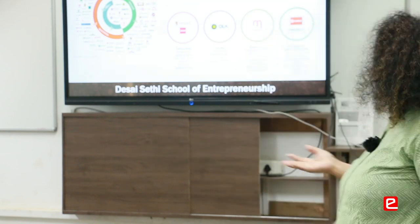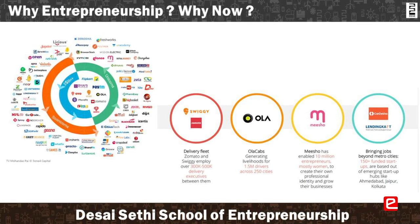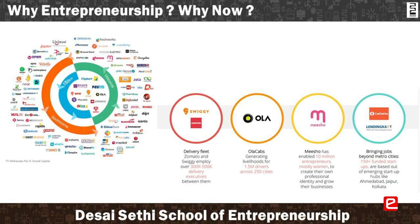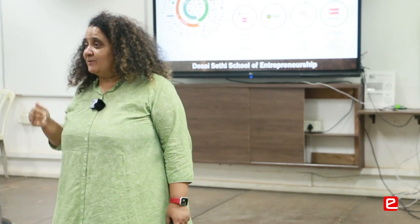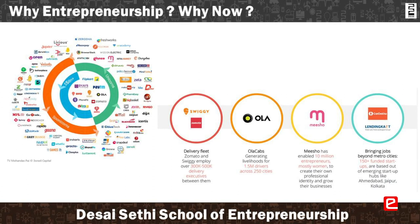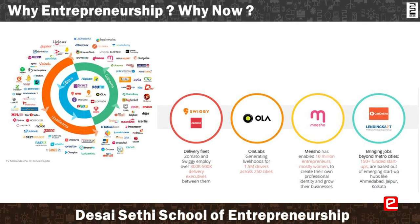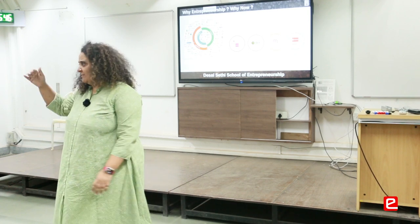For me, the right-hand side is the reason why I like entrepreneurship. Swiggy and Zomato are worth 8,000 crores each, but for me they are people who have generated 300,000 to 500,000 jobs. That is the value a startup brings.